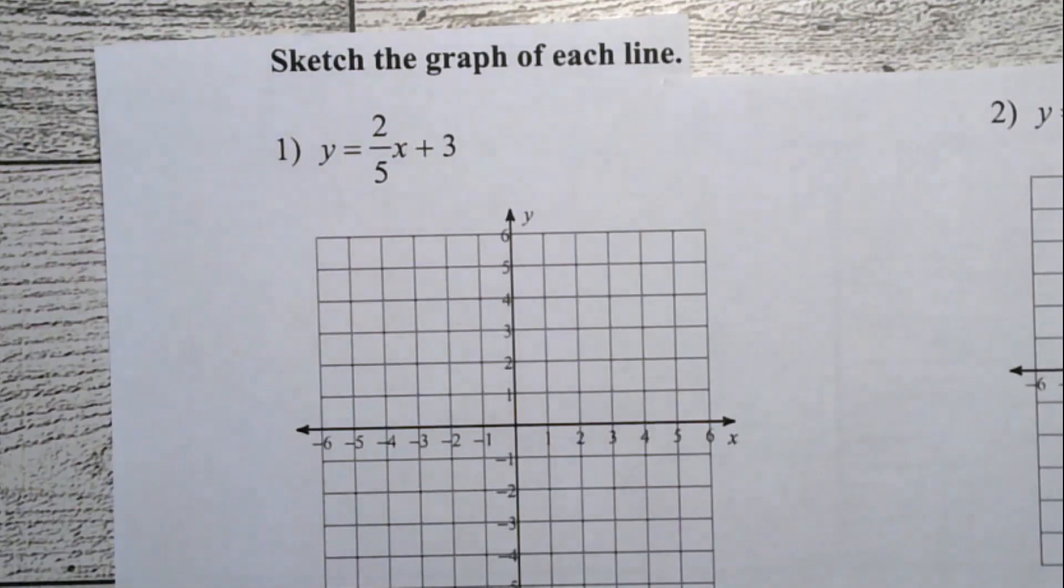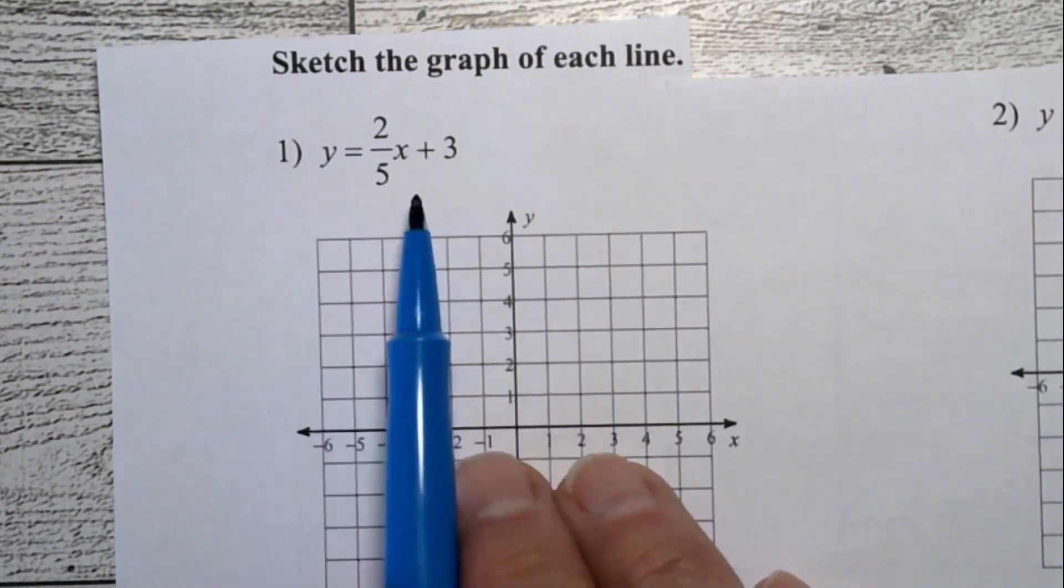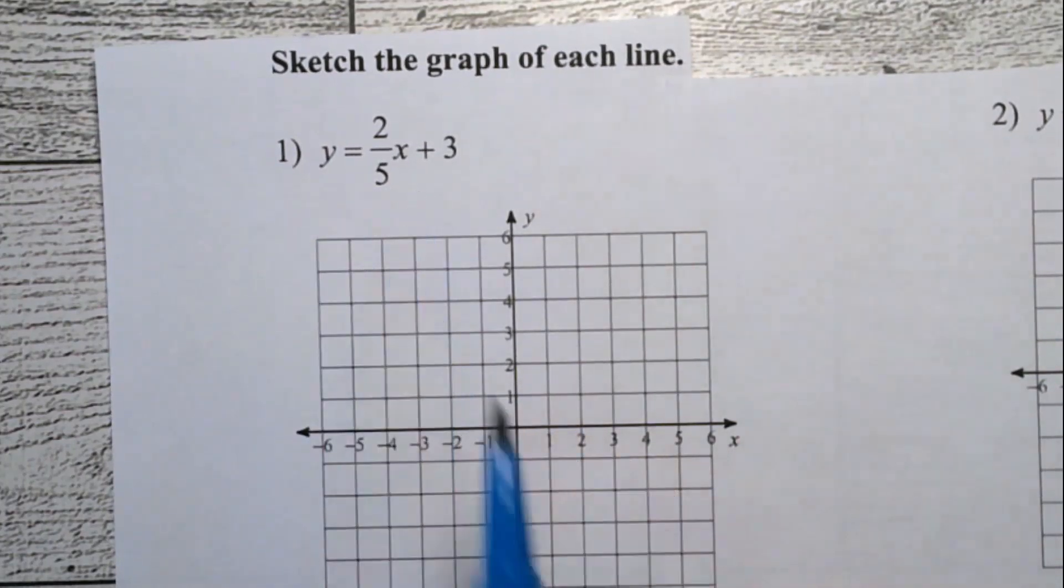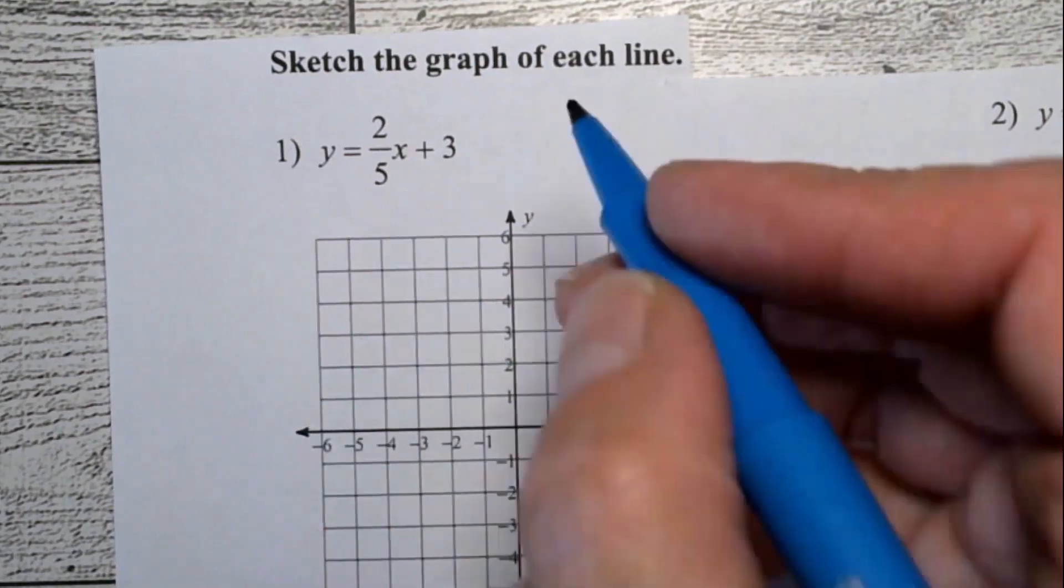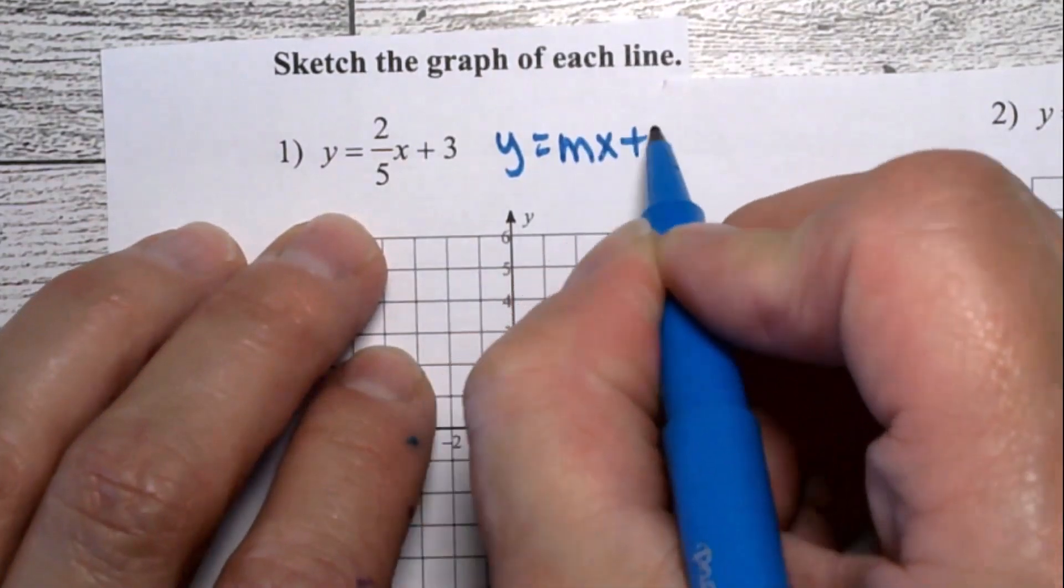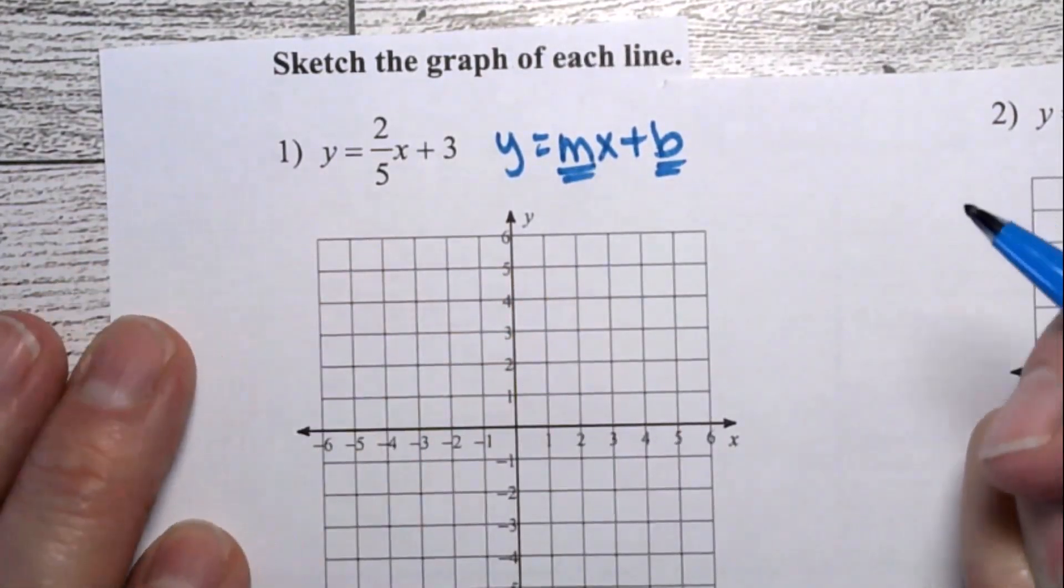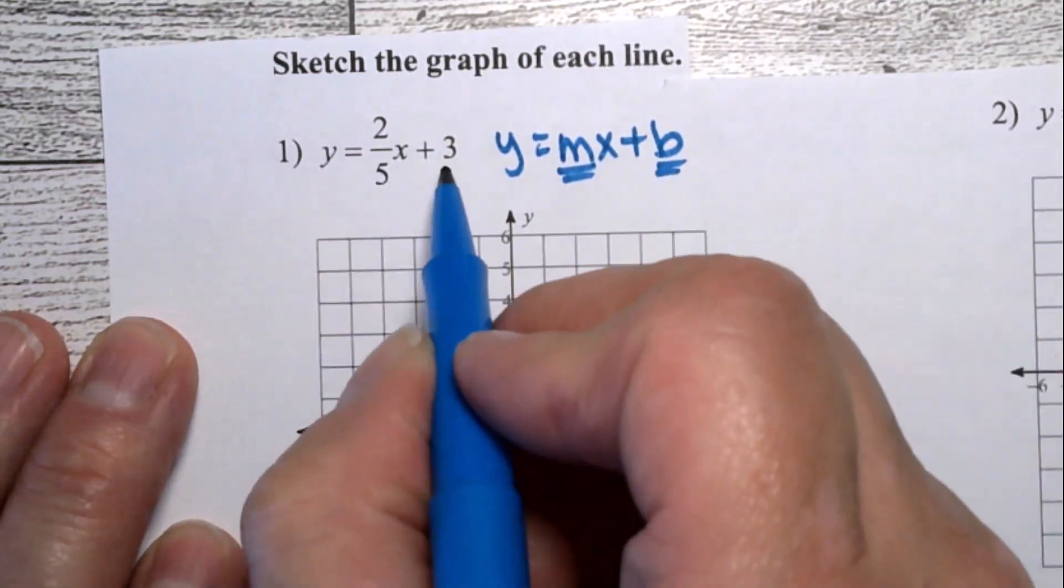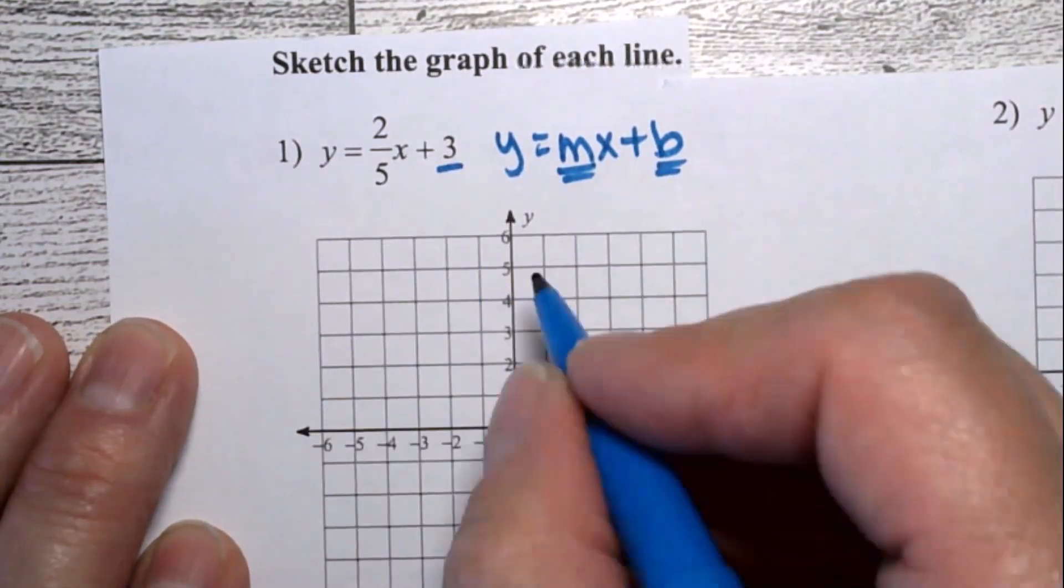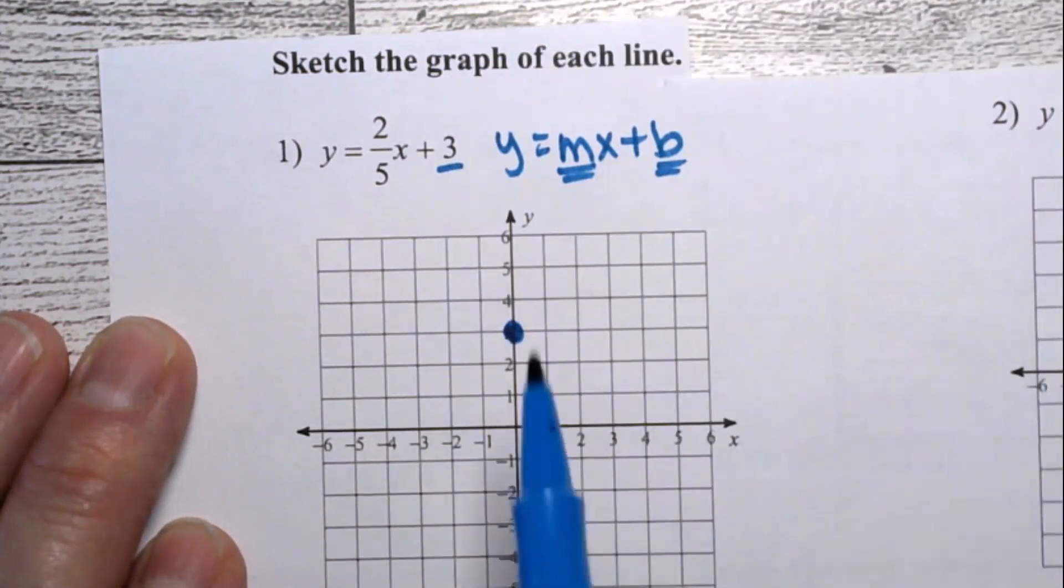So in this first one, number one, we need to graph the line y equals two-fifths x plus three. This is in slope-intercept form, which is y equals mx plus b, where the m is the slope and the b is the y-intercept. So in this case, three is the y-intercept. So I'm going to go up to the y on the three, put a dot, and the slope is two-fifths.